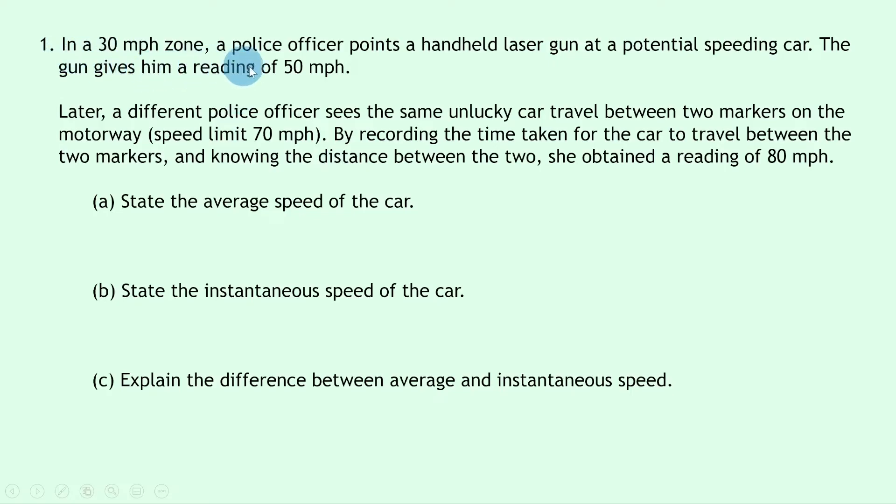Question one says in a 30mph zone, a police officer points a handheld laser gun at a potential speeding car. The gun gives him a reading of 50mph. Later, a different police officer sees the same unlucky car travel between two markers on the motorway with a speed limit of 70mph. By recording the time taken for the car to travel between the two markers and knowing the distance between the two, she obtained a reading of 80mph.